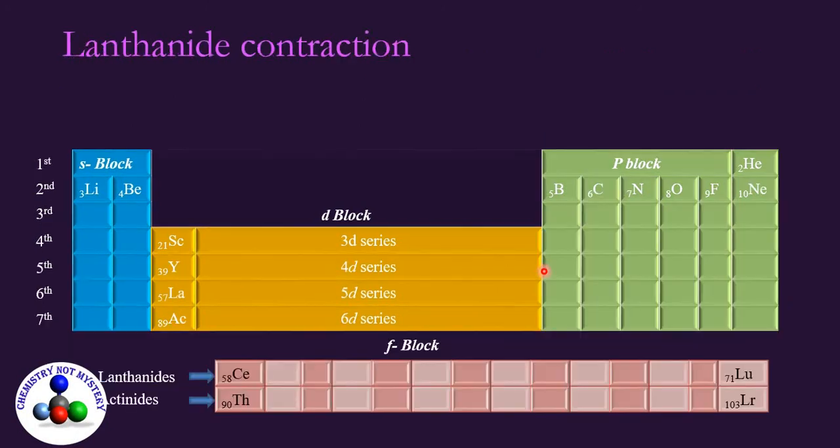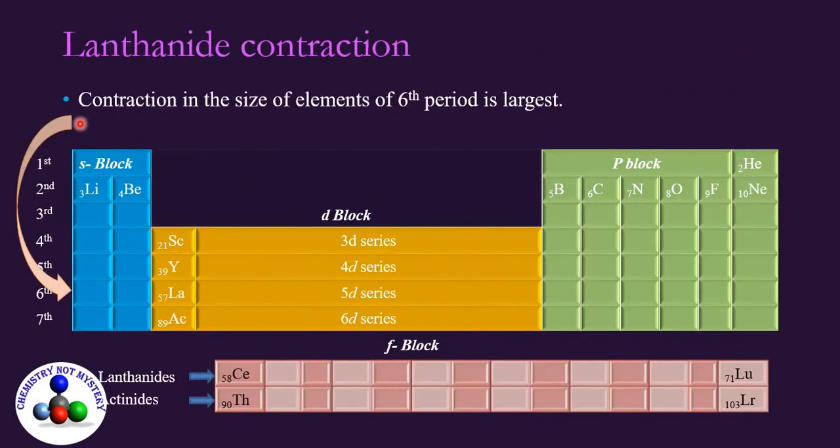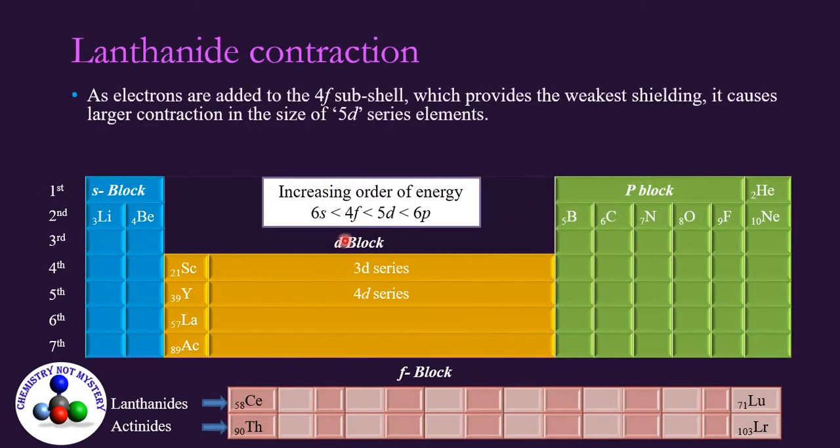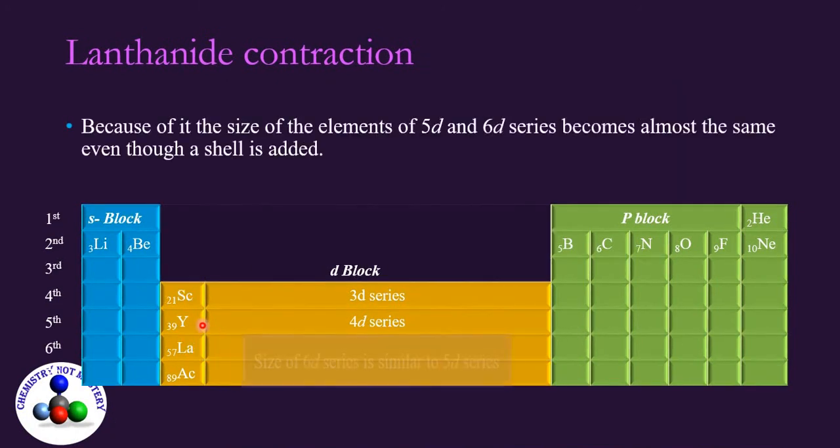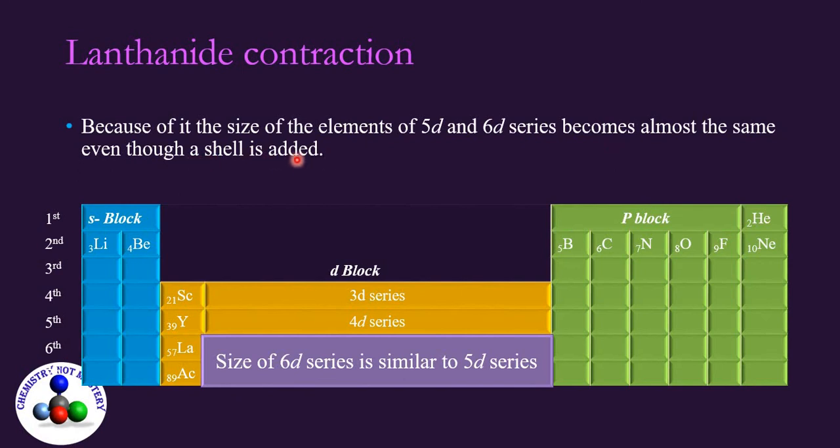The next major contraction is observed in 6th period. After filling the electron in 6s, electrons are first to be filled in 4f then in 5d. 4f orbital provides the weakest shielding. It causes larger contraction in the size of 5d series elements. This is also named as lanthanide contraction, after the name of the first element of the f block. Because of it, the size of elements of 5d and 6d series become almost the same even though a shell is added.